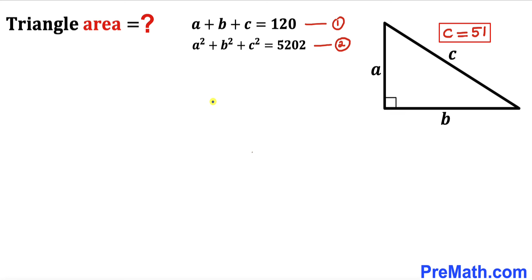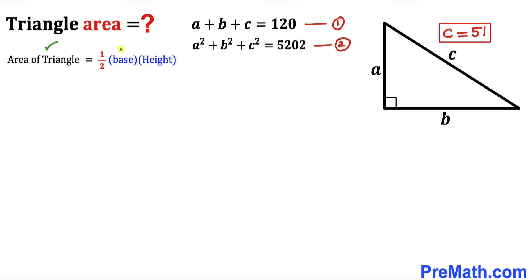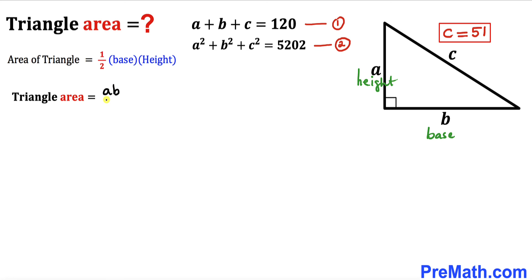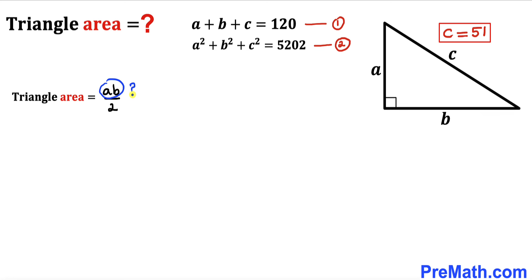Now, since we are interested in calculating the area of this given triangle, let's recall the area formula: Area equals one-half times base times height. In our case, side A is the base and side B is the height, so the area of this triangle is going to be A times B divided by 2. Our task now is to calculate the value of A times B.